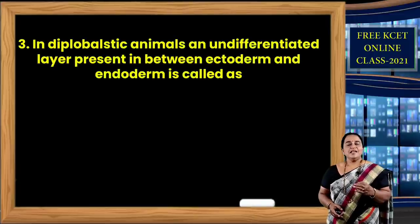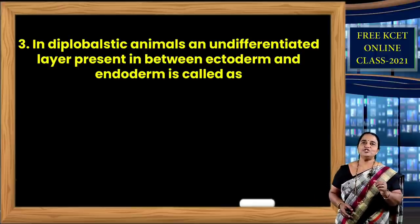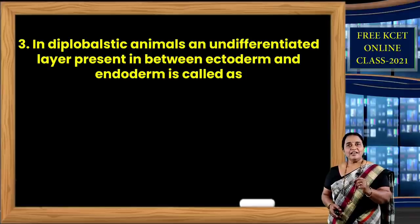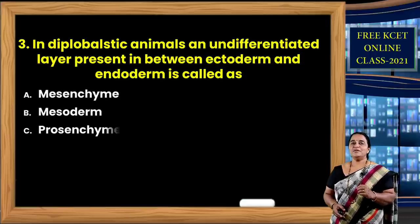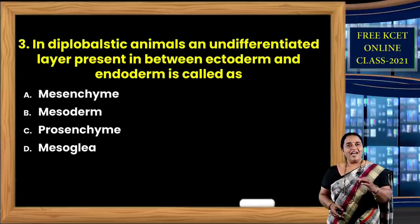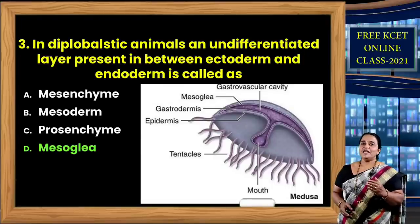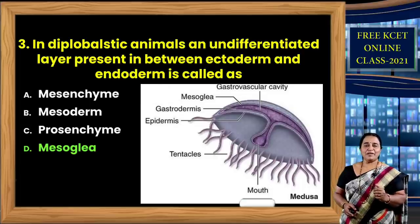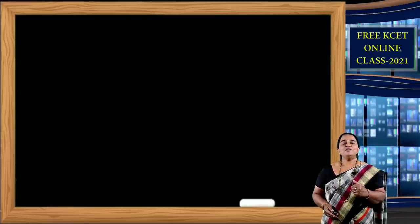When a cut through any plane will never divide the body into equal parts, it is asymmetry — found in poriferans. Any plane passing through the central axis dividing the organism into two identical halves is radial symmetry. When only one plane gives two identical halves, it is bilateral symmetry. The correct option is radial symmetry, found in cnidarians including coelenterates and ctenophorans. Question 3: In diploblastic animals derived from two germ layers, there is an undifferentiated layer between ectoderm and endoderm. Options: mesenchyme, mesoderm, prozenchyme, mesoglia.